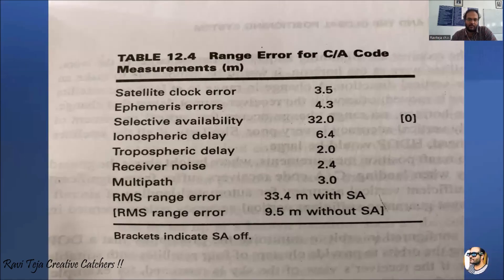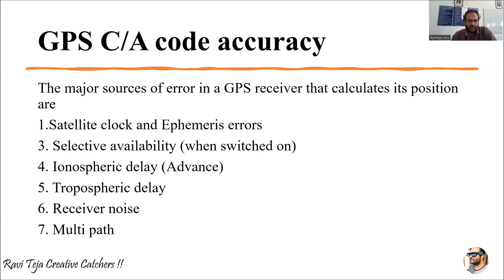These are the C/A code measurements with respect to meters — you can refer to the table. The accuracy is based on the errors calculated from the GPS receiver position. The major error sources include satellite clock error, ephemeris data error, selective availability error, ionospheric and tropospheric delays, receiver noise, and multipath errors. These are all considered with respect to GPS receiver error in C/A code accuracy. Thank you.